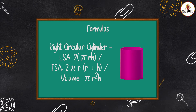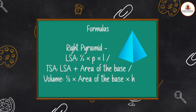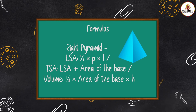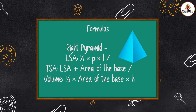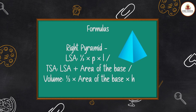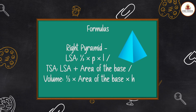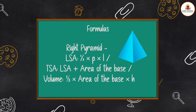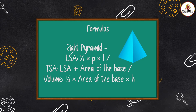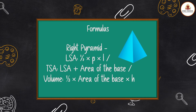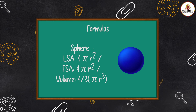Right Circular Cylinder (continued): Volume = πr²h. Right Pyramid: LSA = ½ × base perimeter × slant height (½ × B × L), TSA = LSA + area of the base.